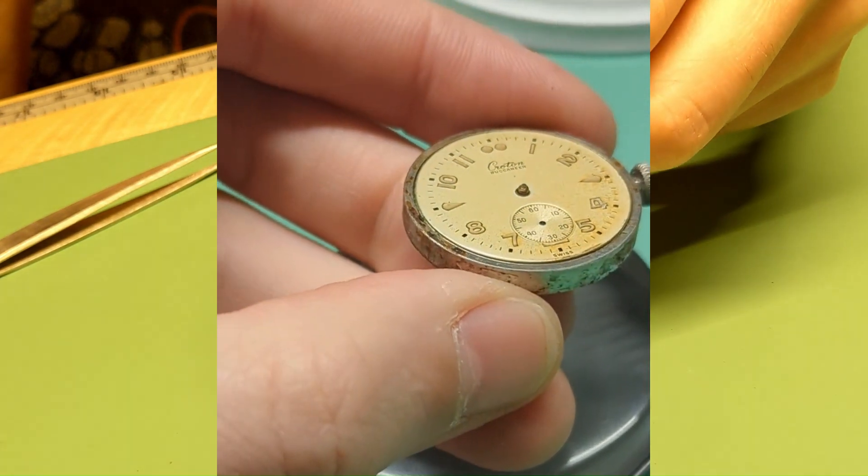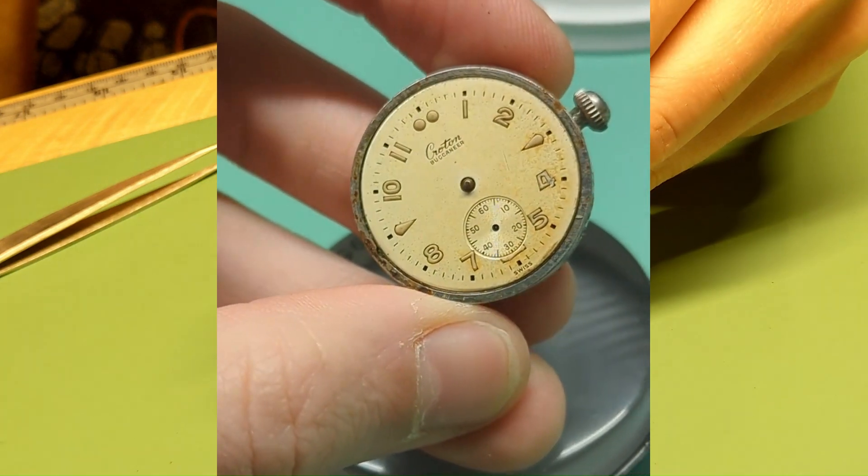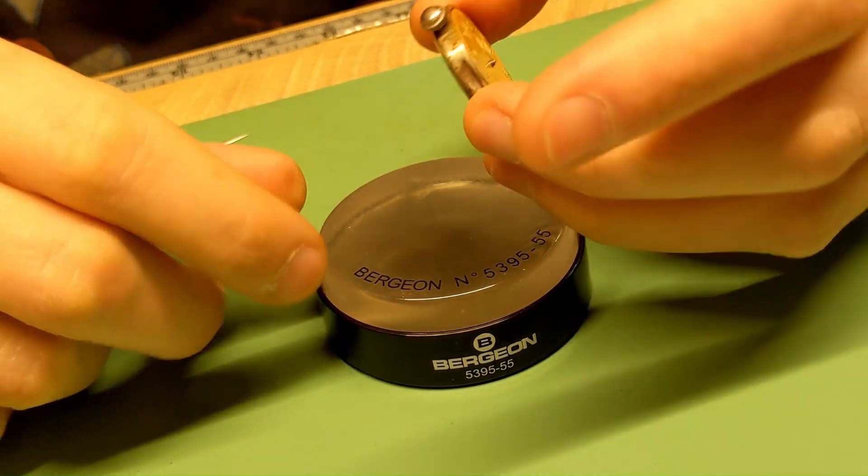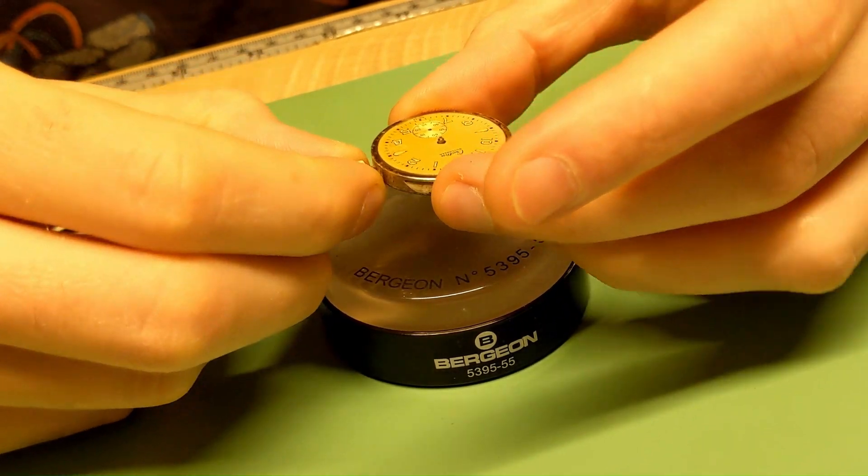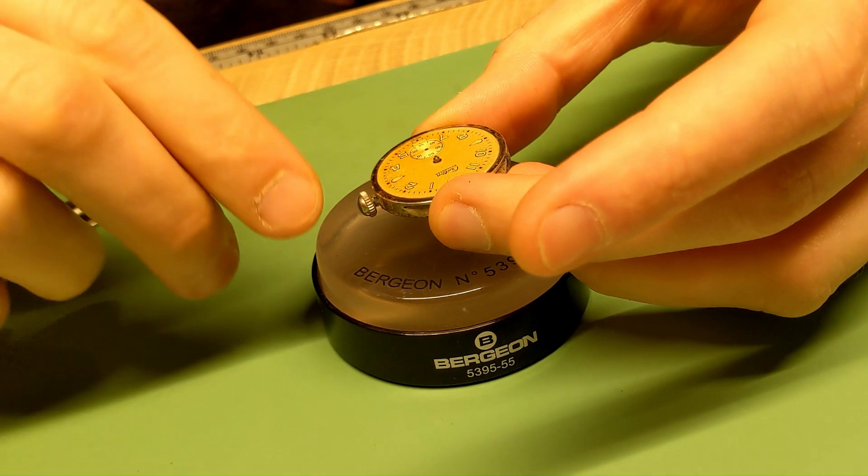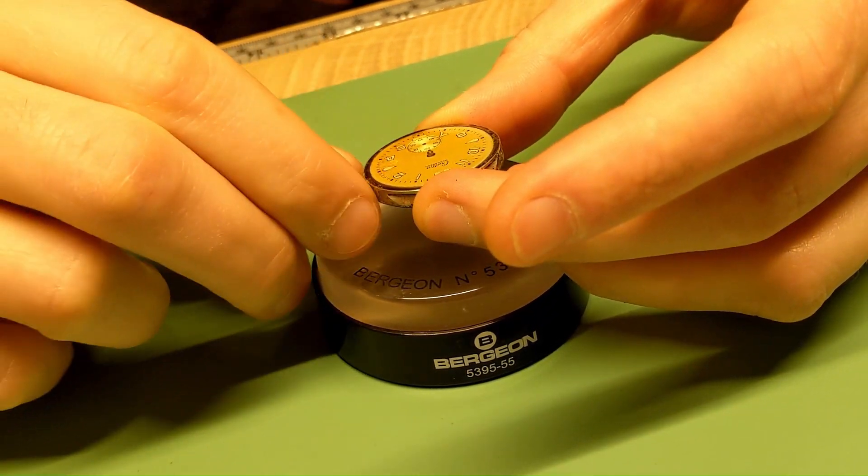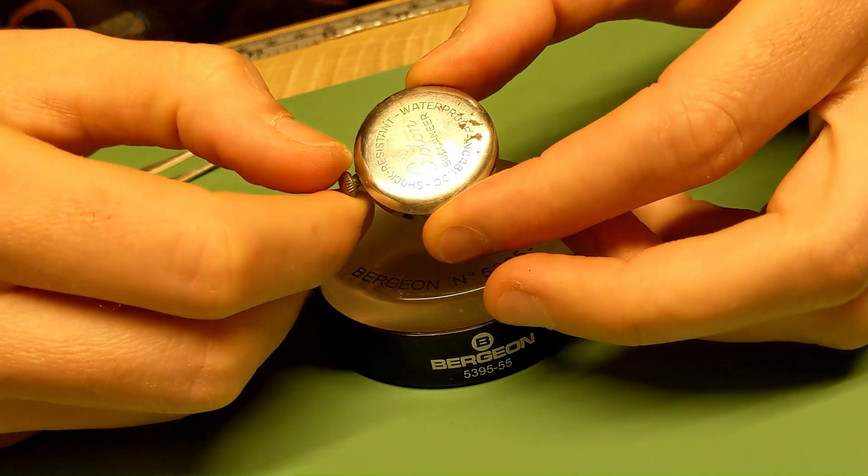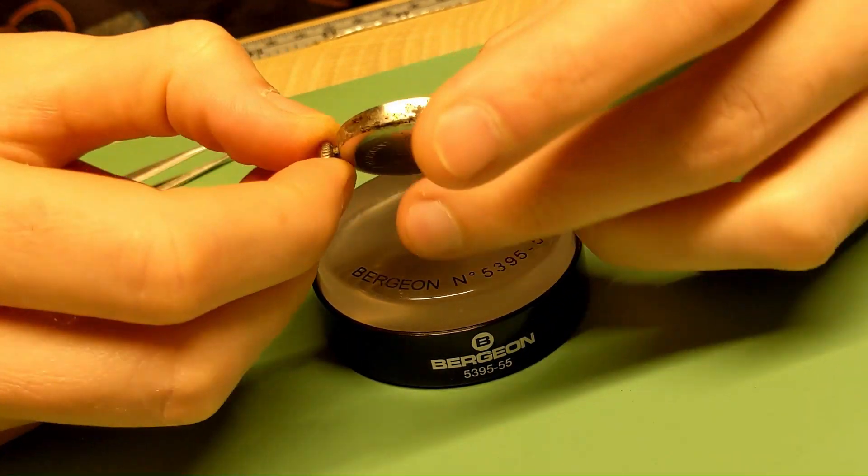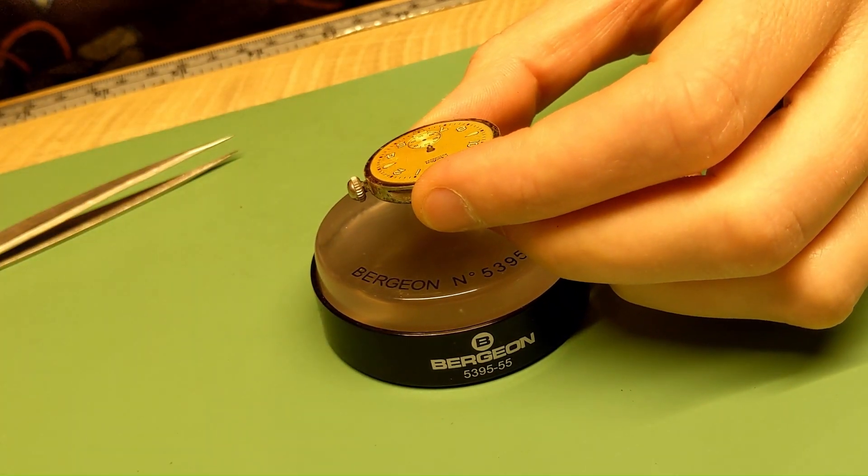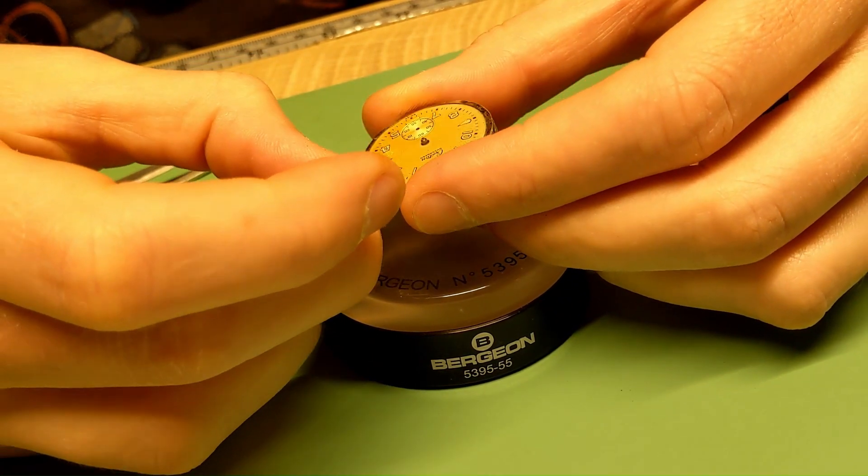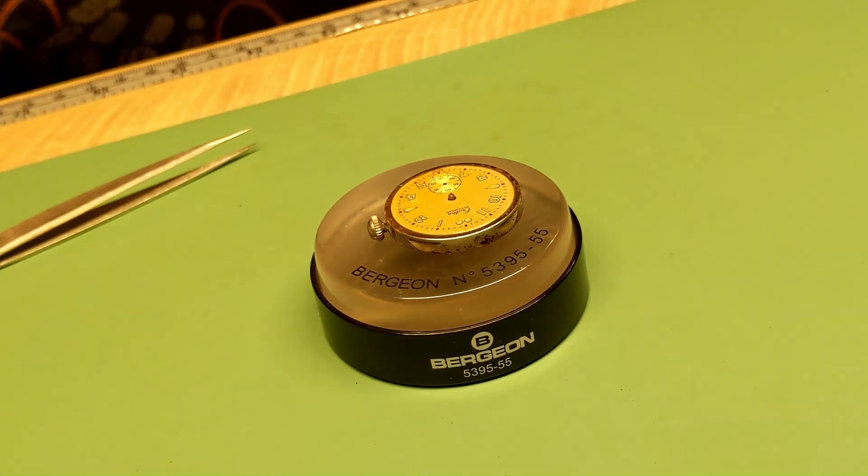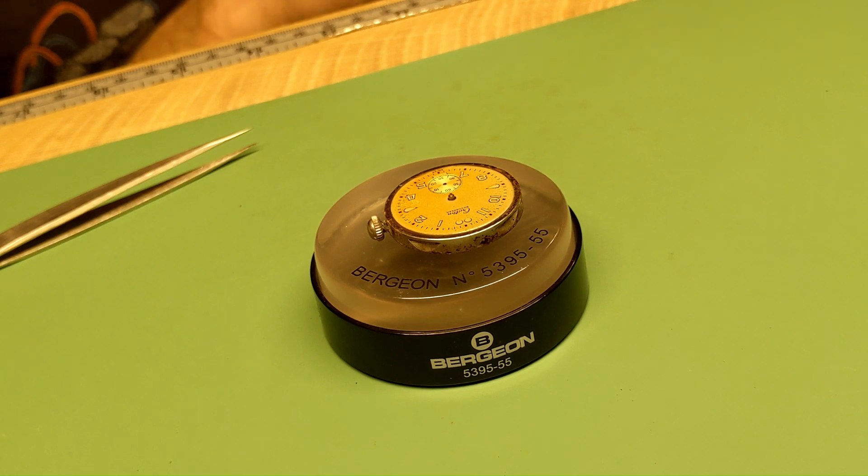Obviously that case needs a lot of cleaning. Now this is a bit of a tricky part. As you can see, the stem is in here, the movement's in here. There's obviously no way to get to the movement without removing this stem. This has what's called a split stem, basically a two-part stem that is friction fit together pretty strongly.